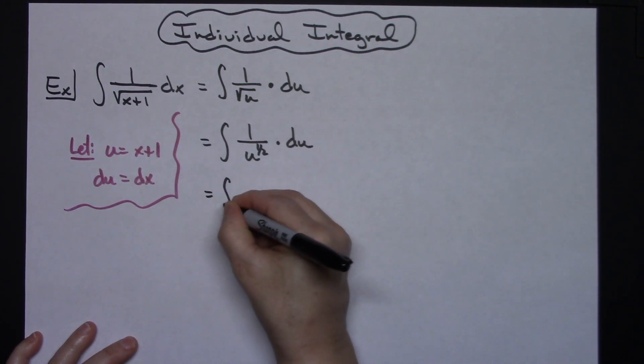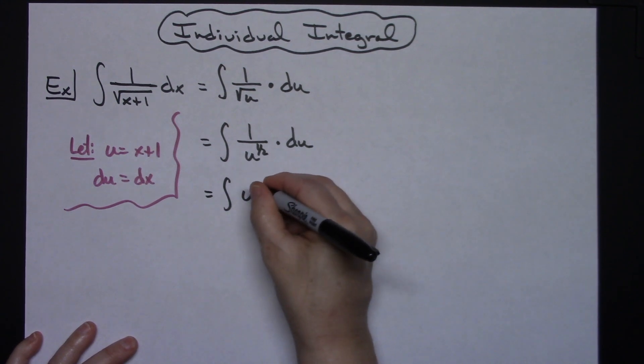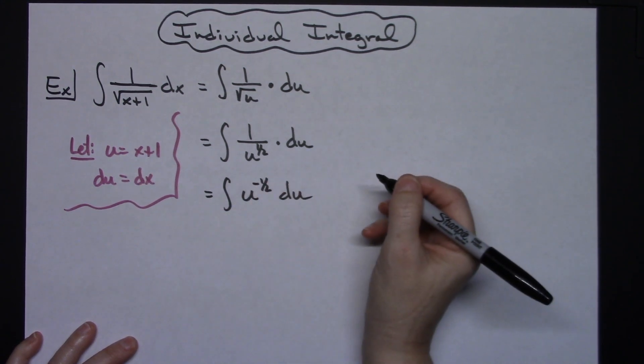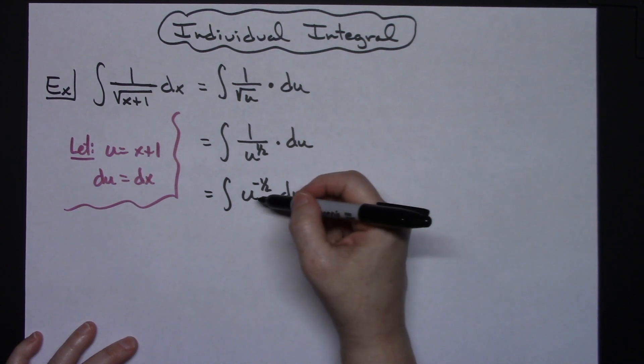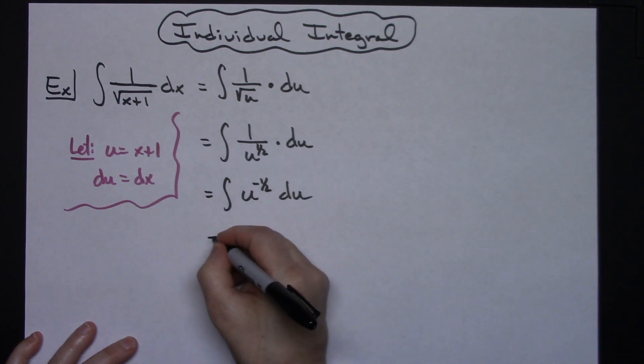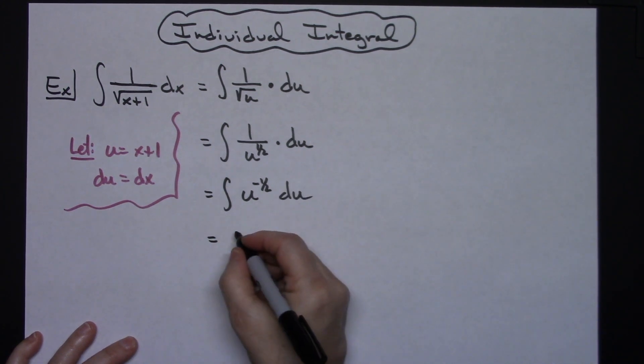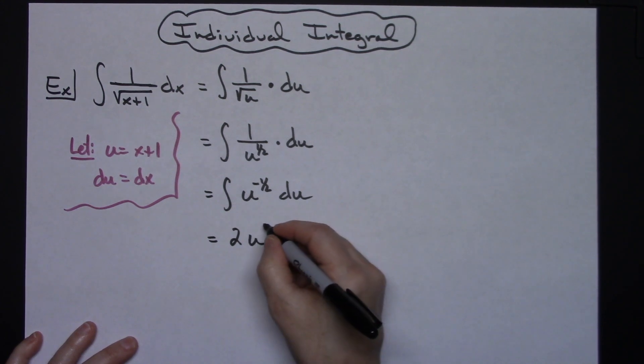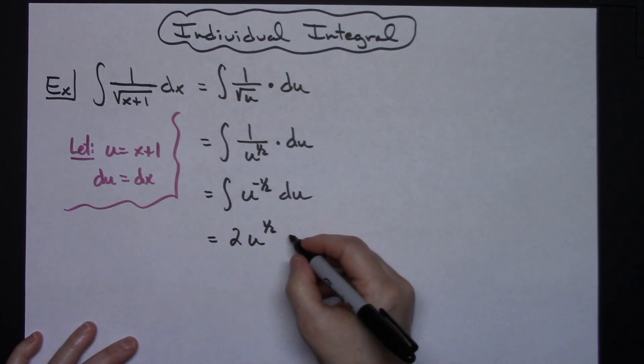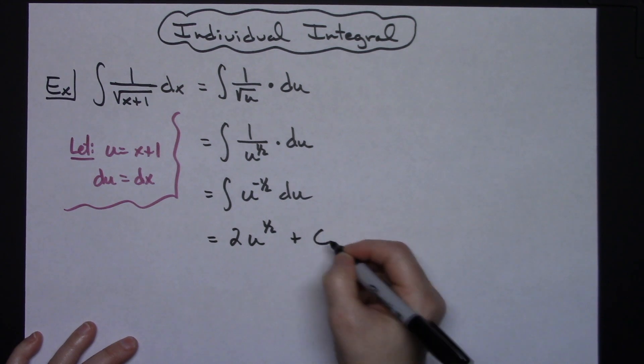So then I'll have the integral of u to the negative 1 half du. Now I'm ready to integrate. Basic straightforward integration here, adding 1 is going to give me a 1 half, and then when I do the 1 over it's going to turn that into a 2 u to the 1 half. And then since I have integrated at this point I can do plus c.